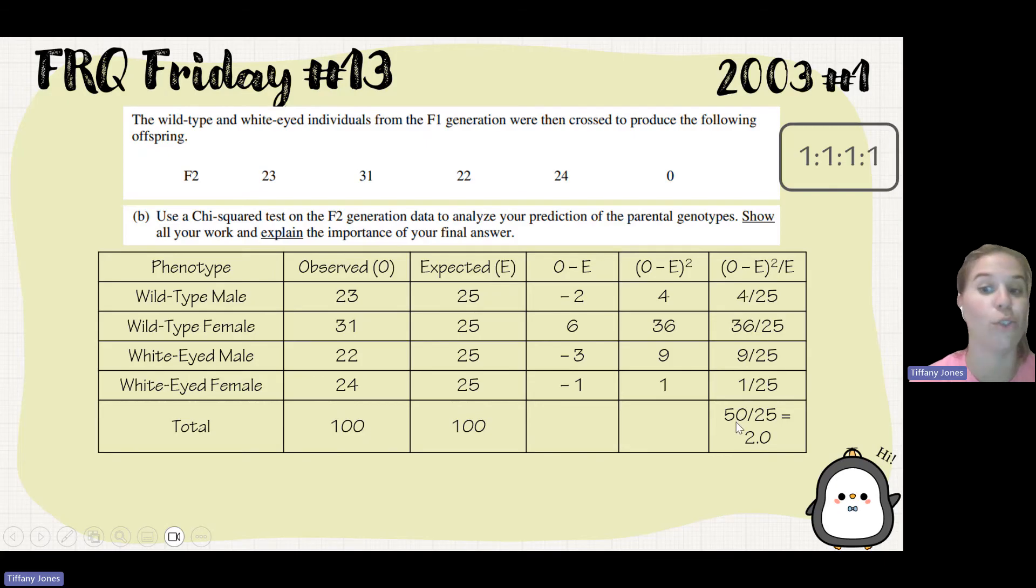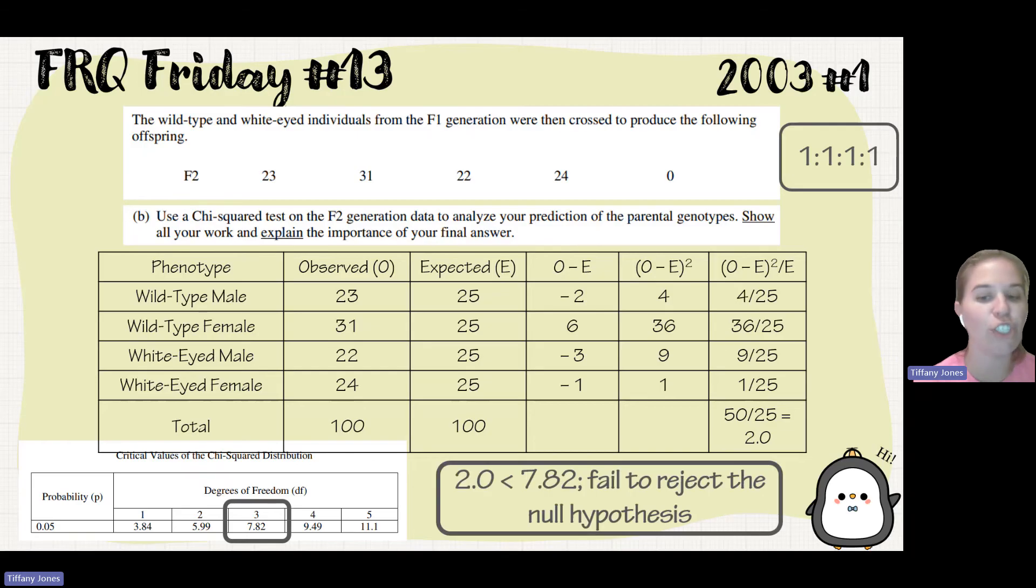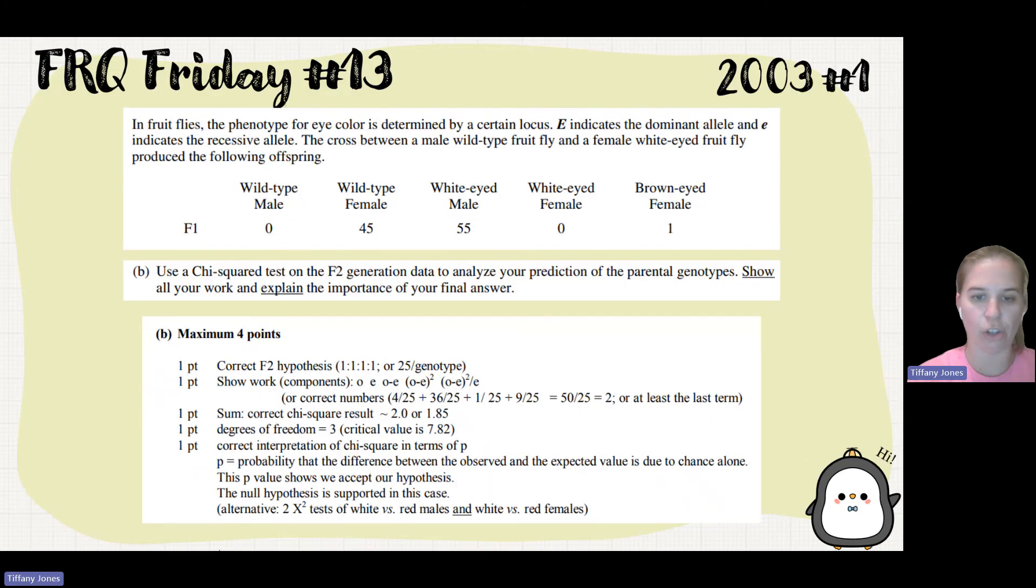So we need to analyze this chi-square. We're going to use our table value. And since we have four different phenotypes, 4 minus 1 gives me a degrees of freedom of 3. So I'm comparing my calculated value of 2 to 7.82. Well, my value of 2 is less than 7.82, and my probability of 0.05 degrees of freedom of 3. So I will say that I'm going to fail to reject my null hypothesis. Fail to reject is the terms that we would use because we can't really accept the hypothesis, but we can fail to reject it. If my number had been larger than 7.82, I would have rejected the null. But since my number is less than the table value, I fail to reject. So that is what you could have put.